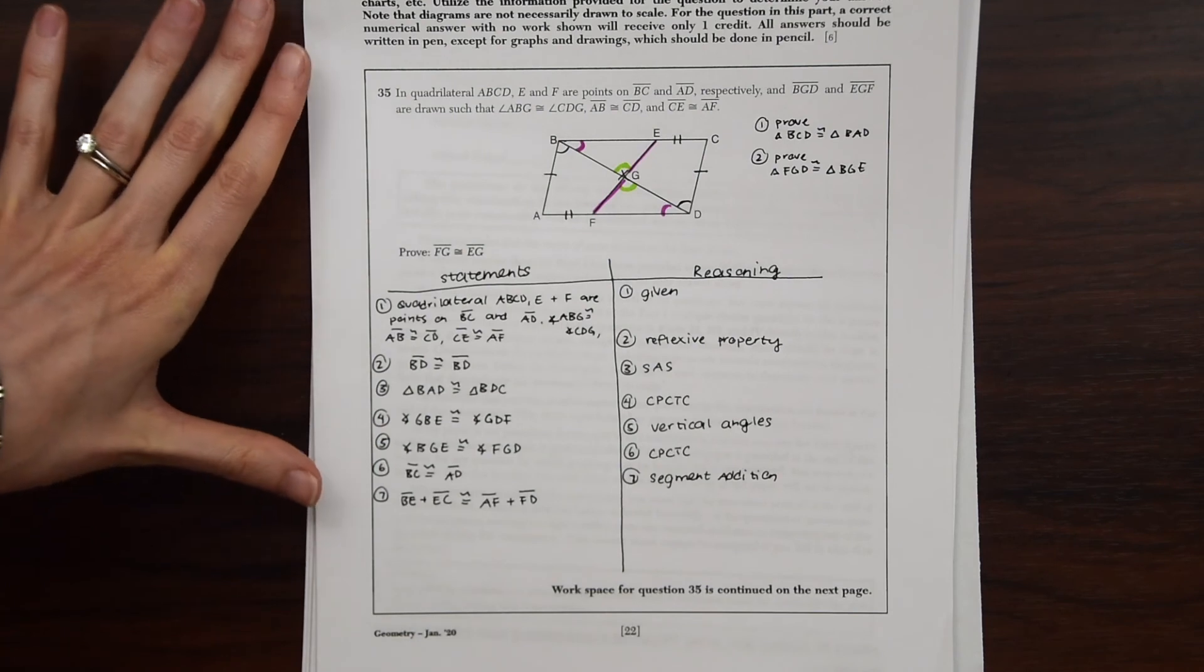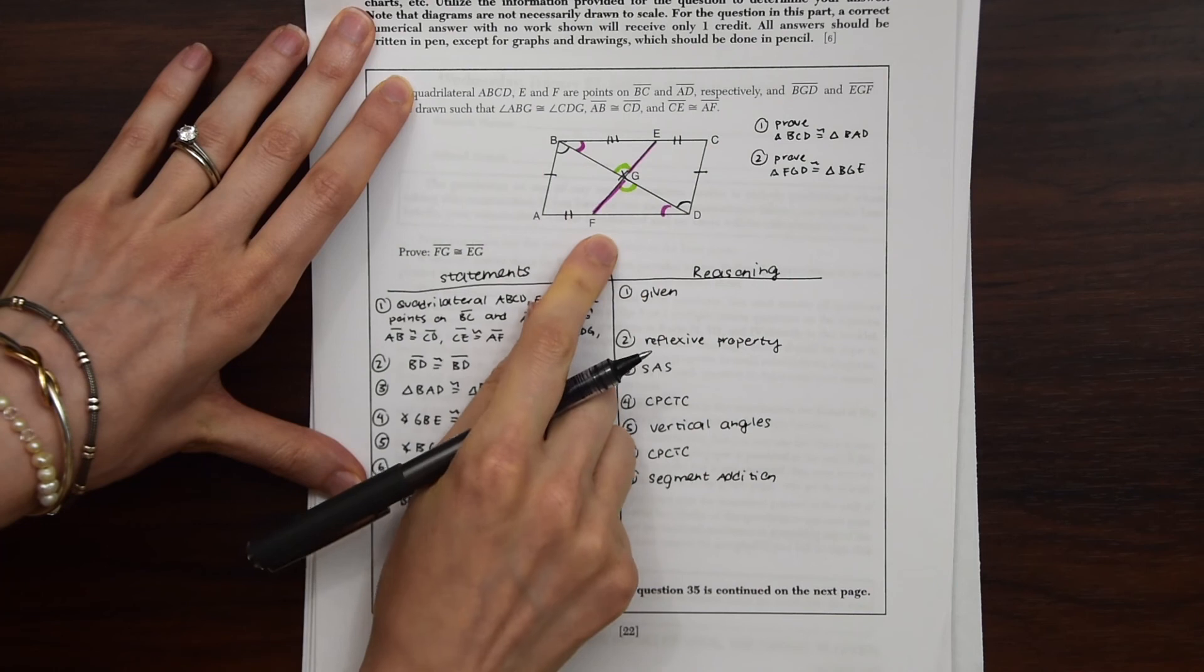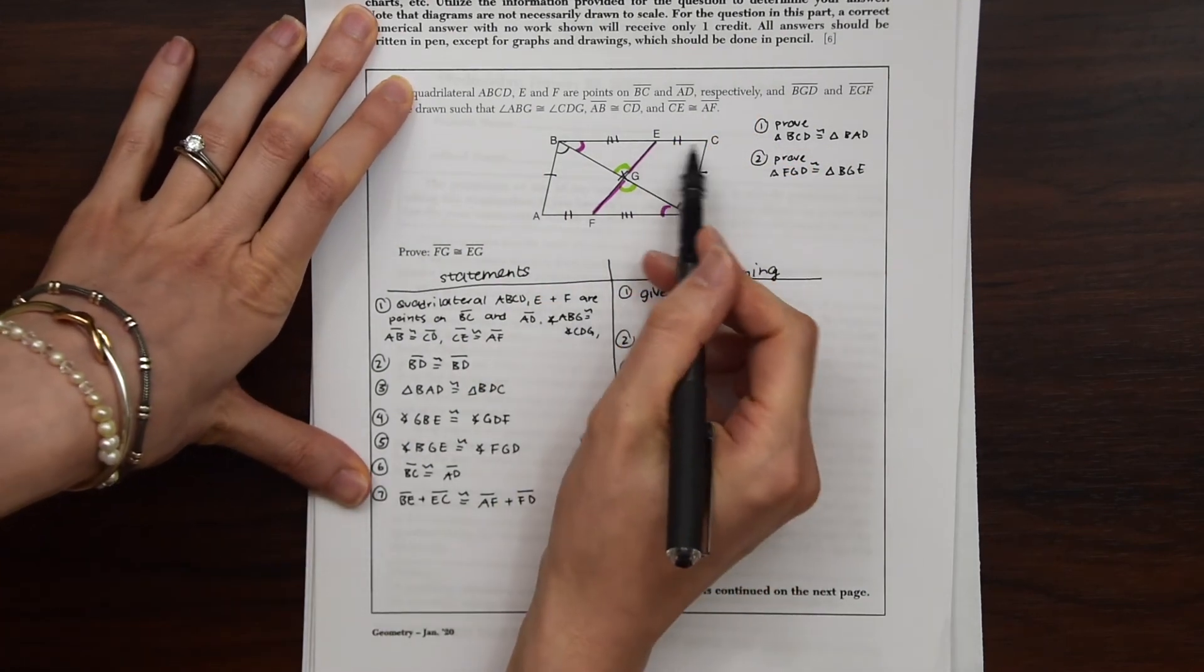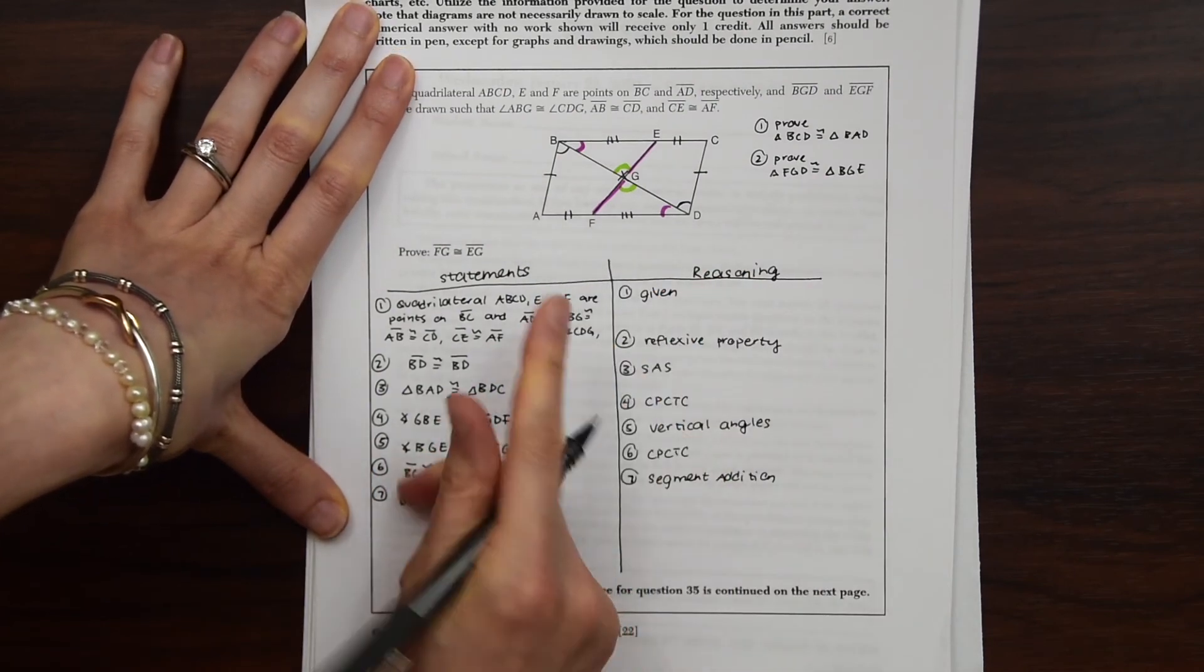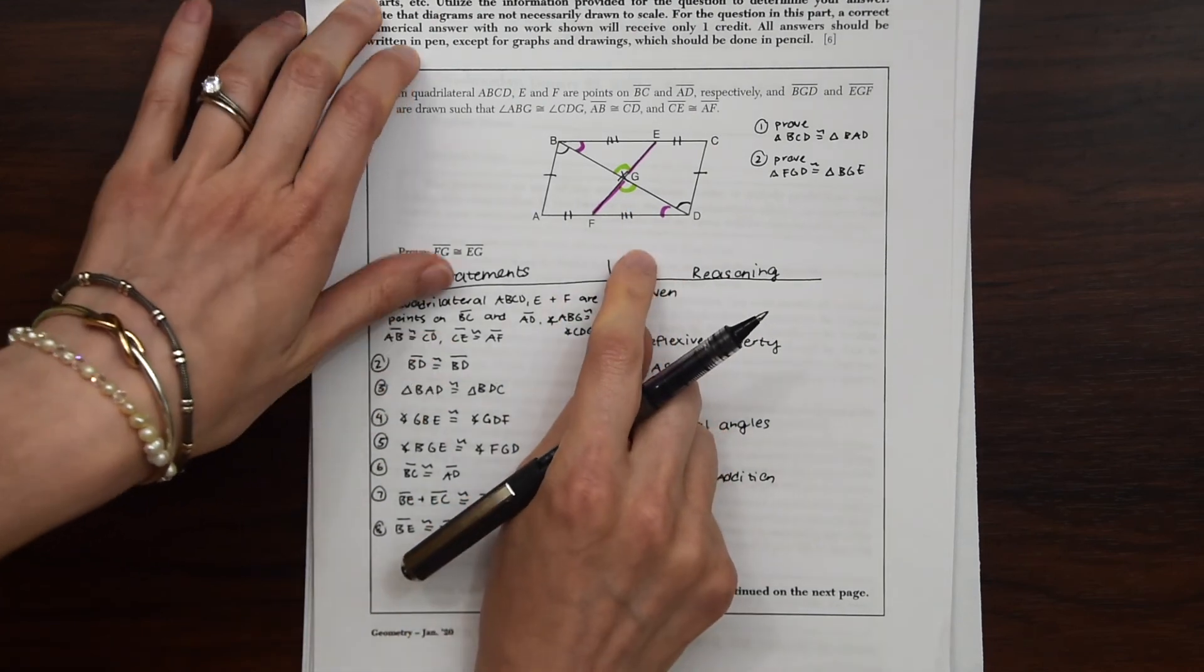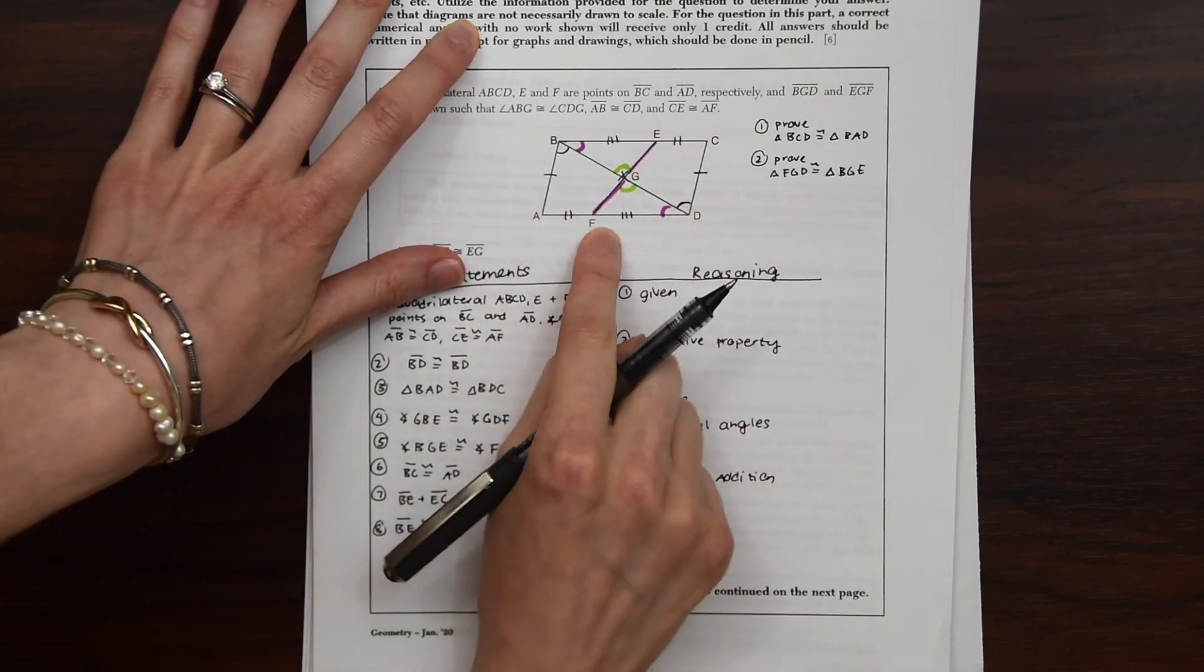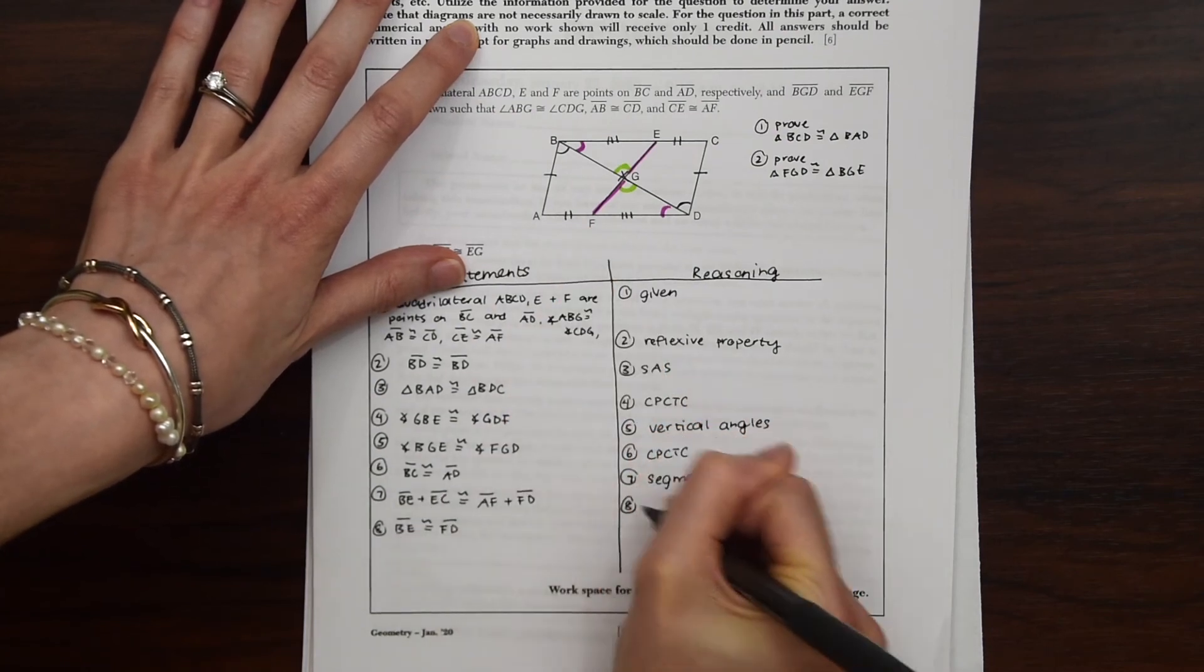From here, we can now say that BE is congruent to FD based on segment subtraction. Because we know that EC is congruent to AF, which we already stated earlier. So let's write that out. BE is congruent to FD. Because we already stated that EC and AF are congruent. Based on segment subtraction.